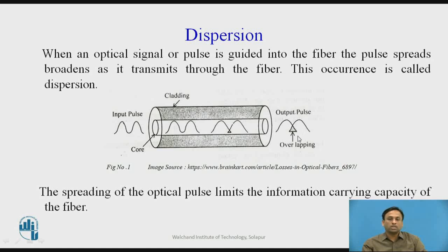Such cases are also known as inter-symbol interference (ISI), and we will not be able to receive the signal properly at the receiver side. In short, when the optical signal or pulse guided into the fiber optic cable gets spread and broadened as it transmits through the fiber, such an occurrence is called dispersion.